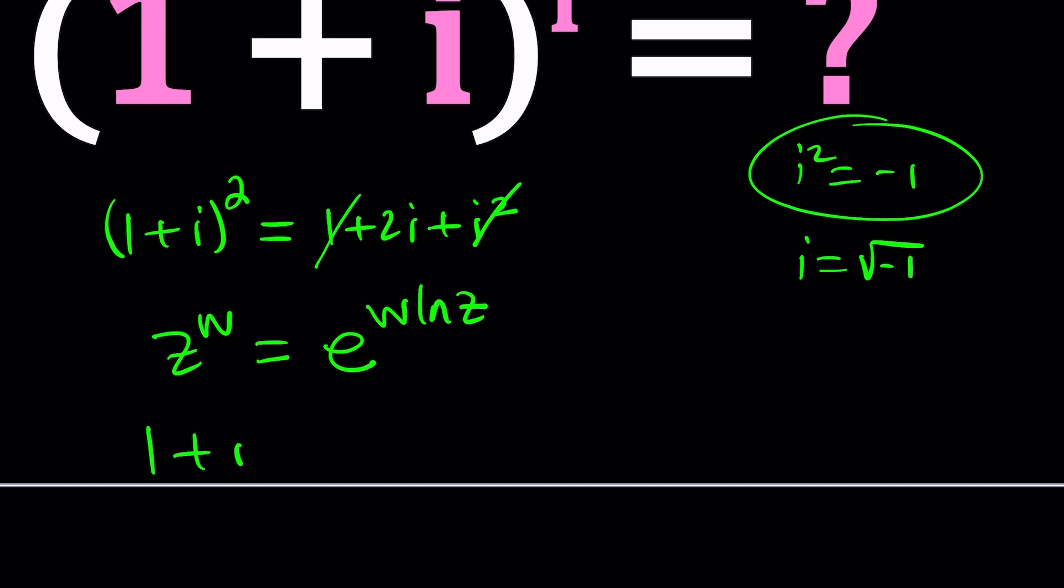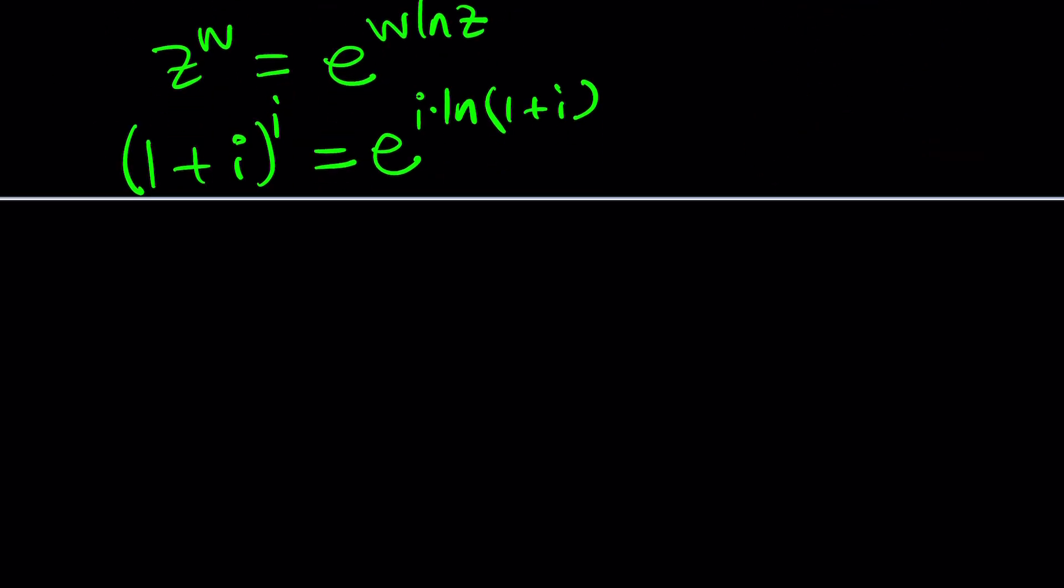So in this case, we have 1 plus i to the power i. So z is 1 plus i, w is i. So this gives us e to the power w, which is i, multiplied by ln 1 plus i. So the next thing we need to look at is ln of 1 plus i. How do you do that?